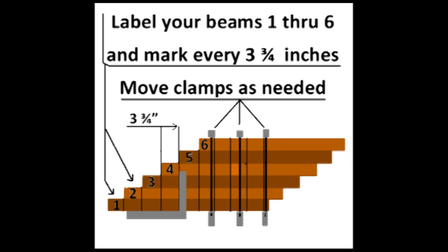Starting at the bottom, label your beams 1 through 6. Next, using an L square, mark lines every 3 and 3 quarter inches over the entire surface of the clamped 4 by 4 area. Now comes the tricky part.